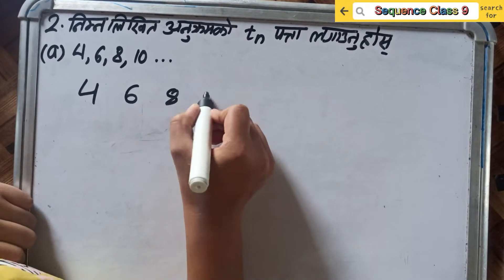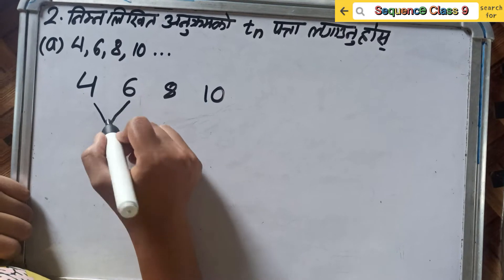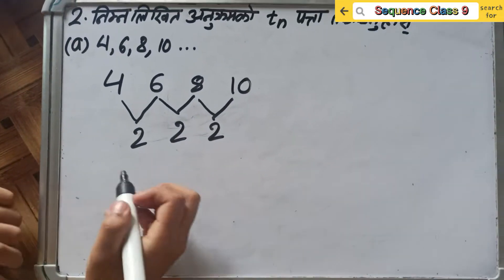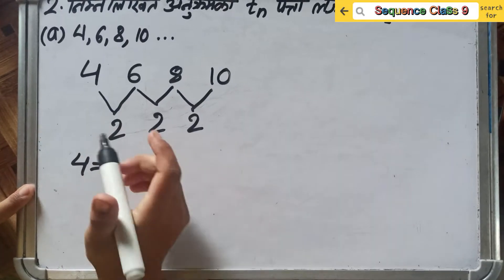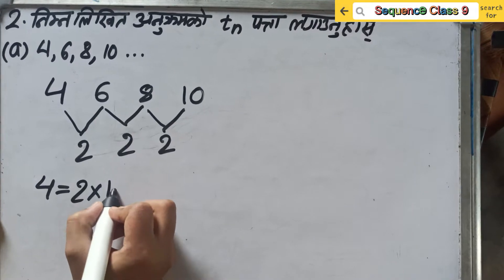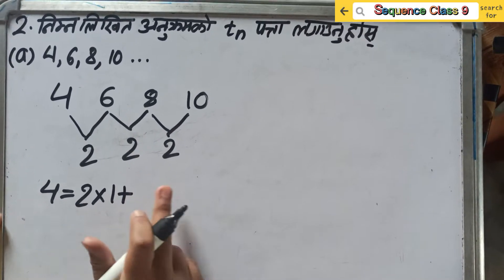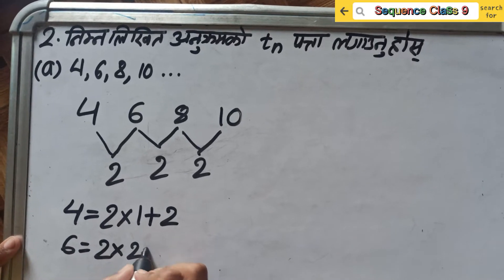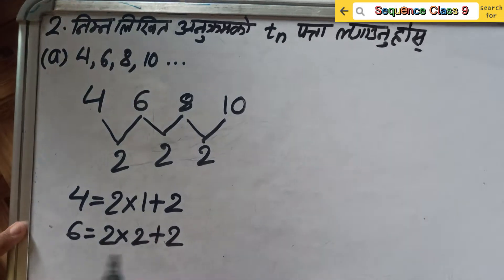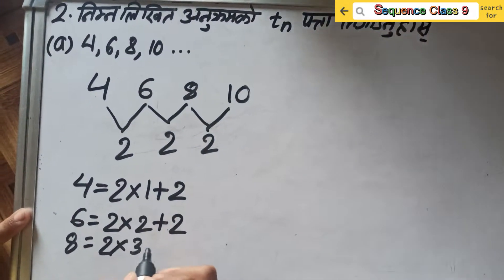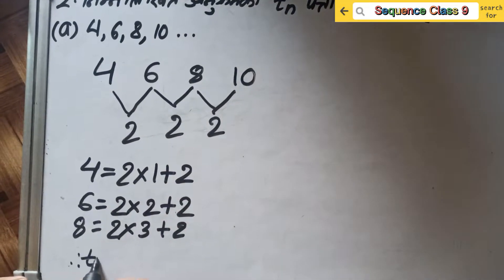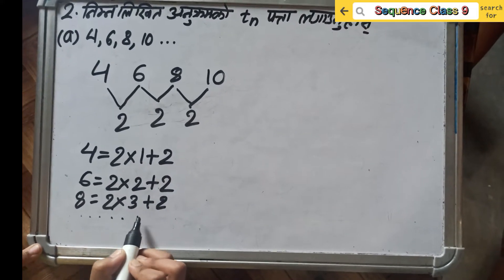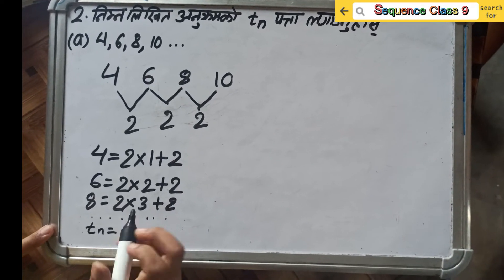I have 13. 4, 6 and 8 are 13. 4 and 6 are 13. 4 and 8 are 13, and 2 are 18. Now 4 equals 10. I have 13. 2 to 1 plus. Now I have 13 and 10. 6 is equal to 2 into 2 plus 4. 8 is equal to 2 into 3 plus 2.